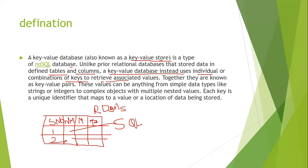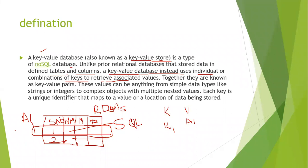Whereas a key-value database does not store student details the way a relational database does. Instead, it uses individual or combination of keys to retrieve associated values. For example, a particular student record is stored at memory address A1, and the key — say key one — contains the value A1. So key one maps to the row stored at memory location A1.